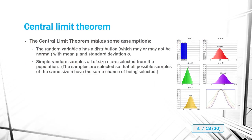To start off with, the central limit theorem makes some assumptions. The first assumption is that the random variable X has a distribution with mean mu and standard deviation sigma. That distribution may or may not be normal, but that's okay — there is a distribution associated with the random variable. The other assumption is that simple random samples, all of the same size n, will be selected from the population.